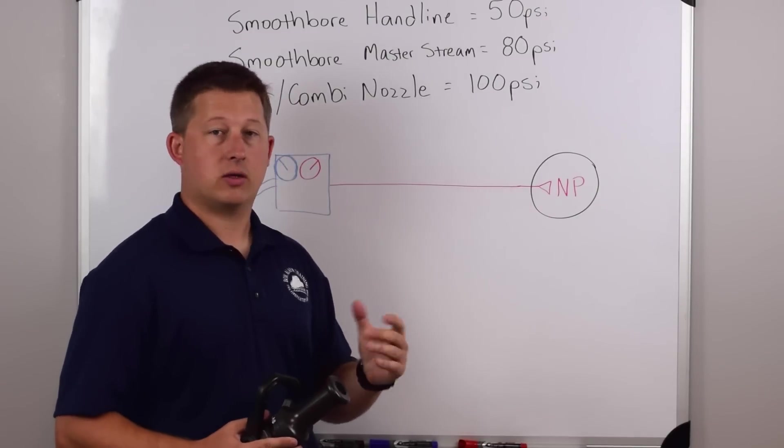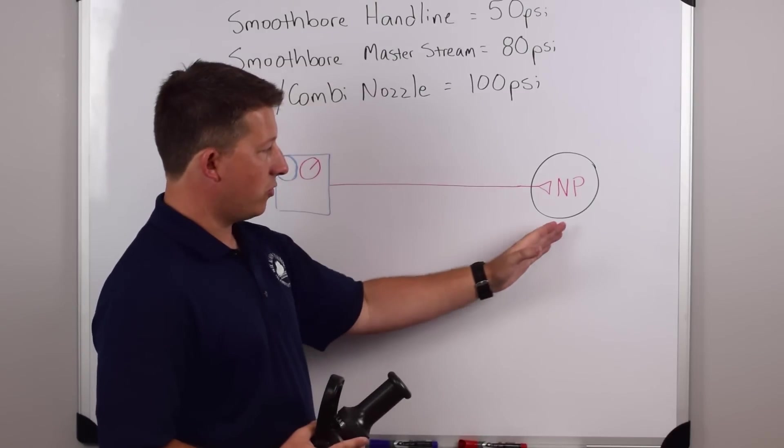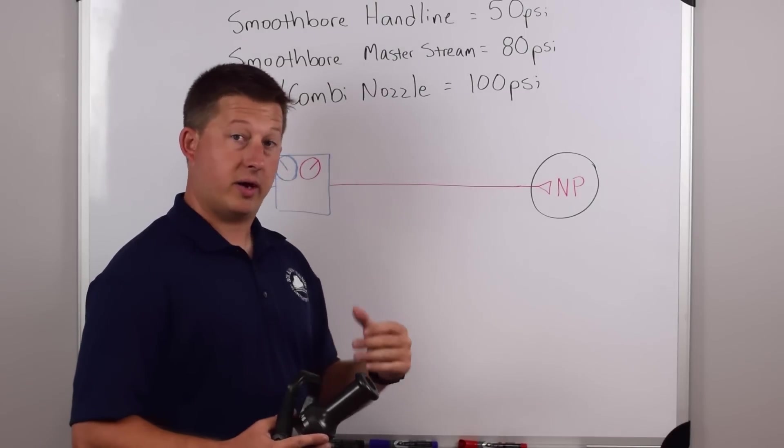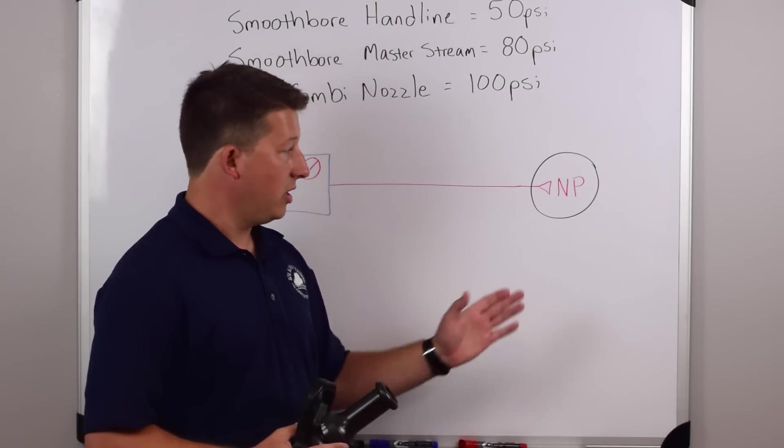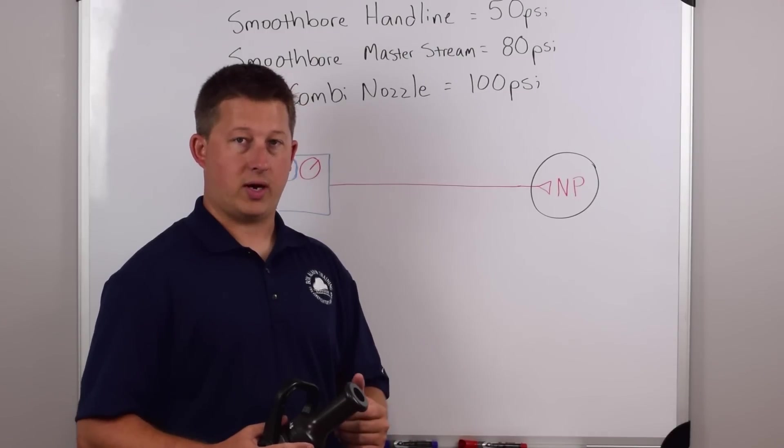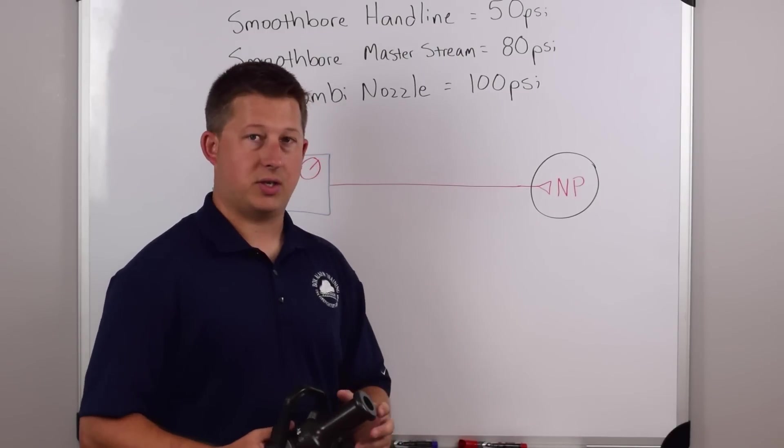So if we get underneath 50 PSI, we'll have less flow through the nozzle. If we get over 50 PSI, we're going to have more flow through the nozzle.